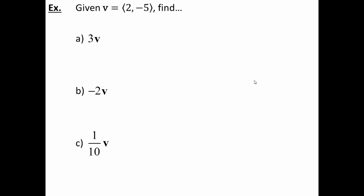So the vector was (2, -5). 3v would give us (6, -15), 2 times 3, -5 times 3. Negative 2v would be (-4, 10), 2 times -2, -5 times -2. And then last one is 1 tenth v. So that would be (1/5, -1/2).